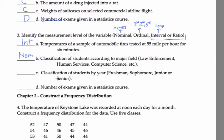Classification by year. Freshman, sophomore, junior, senior. That's ordinal because freshman comes first, then sophomore, then junior, then senior. There's an order to them. So that's ordinal.